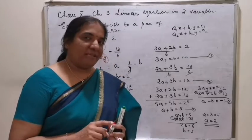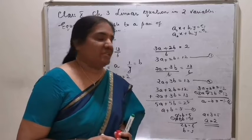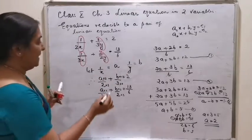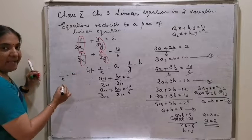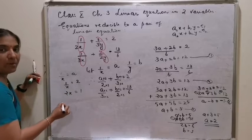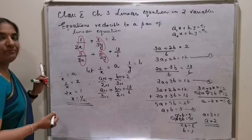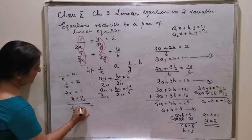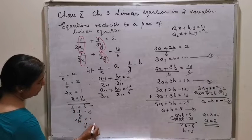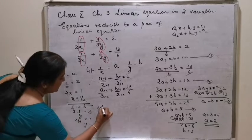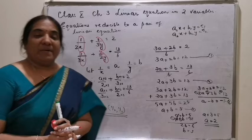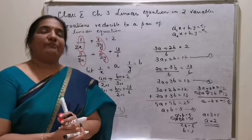The equation is in x and y, so we have to find the final values by substituting back. 1 by x is equal to a, that is 1 by x is equal to 2. By cross multiplication, 2x is equal to 1, or x is equal to half. Similarly, 1 by y is equal to b, so 1 by y is equal to 3, giving 3y equals 1, or y equals 1 by 3. So the solution is x equals 1 by 2, y equals 1 by 3. This is how the equation is reducible to a pair of linear equations.